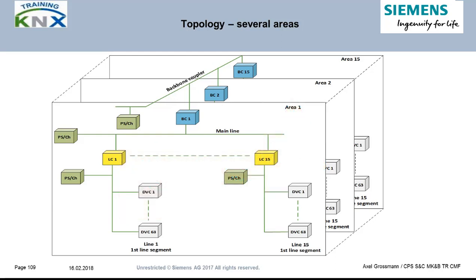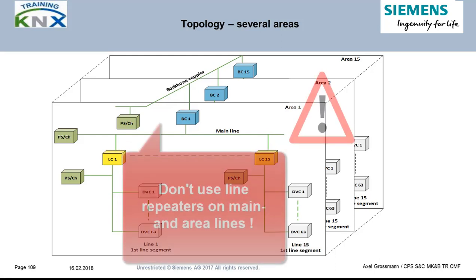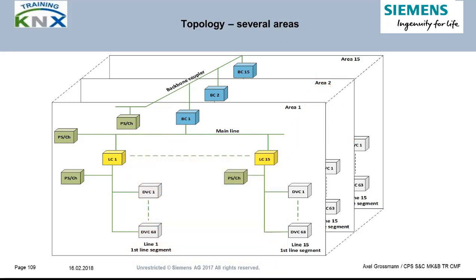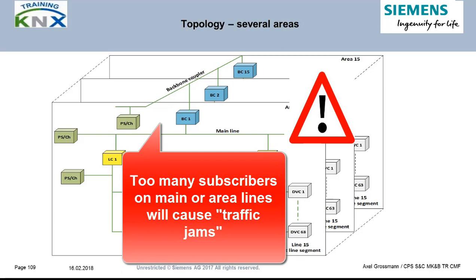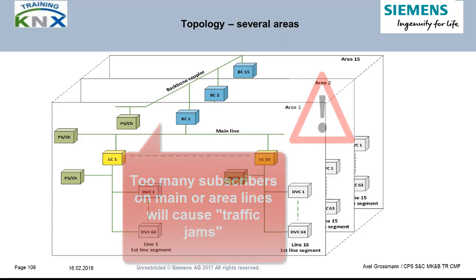The reason repeaters are problematic is their lack of filter functions. Main and area lines have no repeaters — for practical reasons it is simply not permitted, although ETS has no limitation on that point. Even 64 subscribers can produce more telegrams than is good for a main or area line. Imagine what would happen with repeaters on such a line without any filter option.